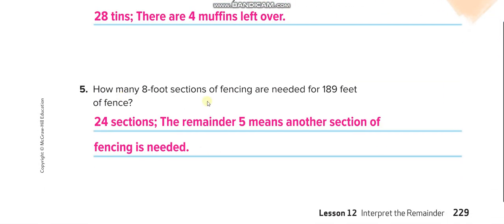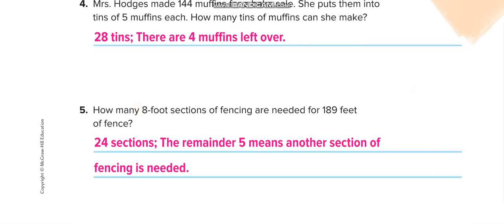How many 8-foot sections of fencing are needed for 189 feet of fence? So 189, when you divide it by 8, you'll get 23. Let us divide this last one here. 1, 8, 9, and 8 times 2, 16, minus 2, 9, 8 times 3, 24, 5. So the remainder is 5.